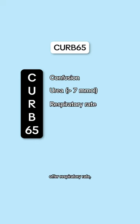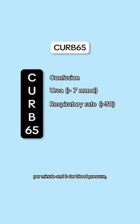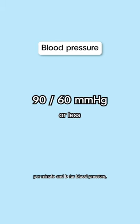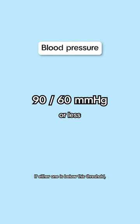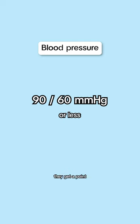R is for respiratory rate. They score a point if their rate is greater than 30 breaths per minute. B is for blood pressure. They get a point if their systolic is less than 90, or if their diastolic is less than 60. If either one is below this threshold, they'd get a point.